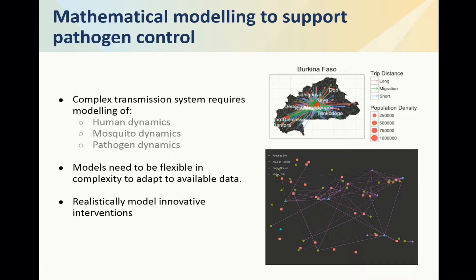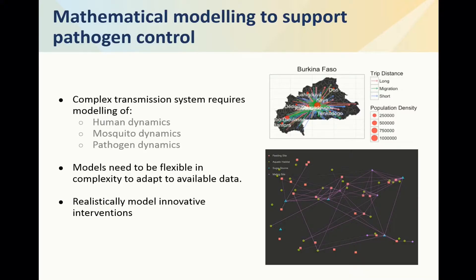I'd like to talk about how we're using mathematical models to inform pathogen control. As we heard from Dr. Harris's talk, mosquito-borne pathogens are an incredibly complex system — really the interactions between three entirely different species: humans, mosquitoes, and the pathogen themselves. Control and elimination of these pathogens requires an understanding of these interactions. For example, if we deploy a new anti-malarial drug that kills blood-stage malaria, how will we predict that will affect the population-level burden of disease? Likewise, if we build a new road connecting two previously disconnected towns, how will that affect the flow of pathogen between those places?